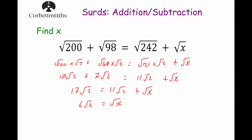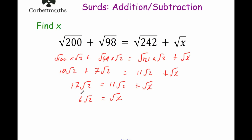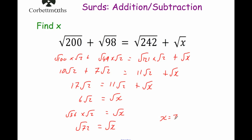Now we want to find x. We can write 6 Root 2 as a single surd — the reverse of simplifying. So 6 Root 2 equals Root 36 times Root 2, which equals Root 72. Therefore Root x equals Root 72, so x equals 72.